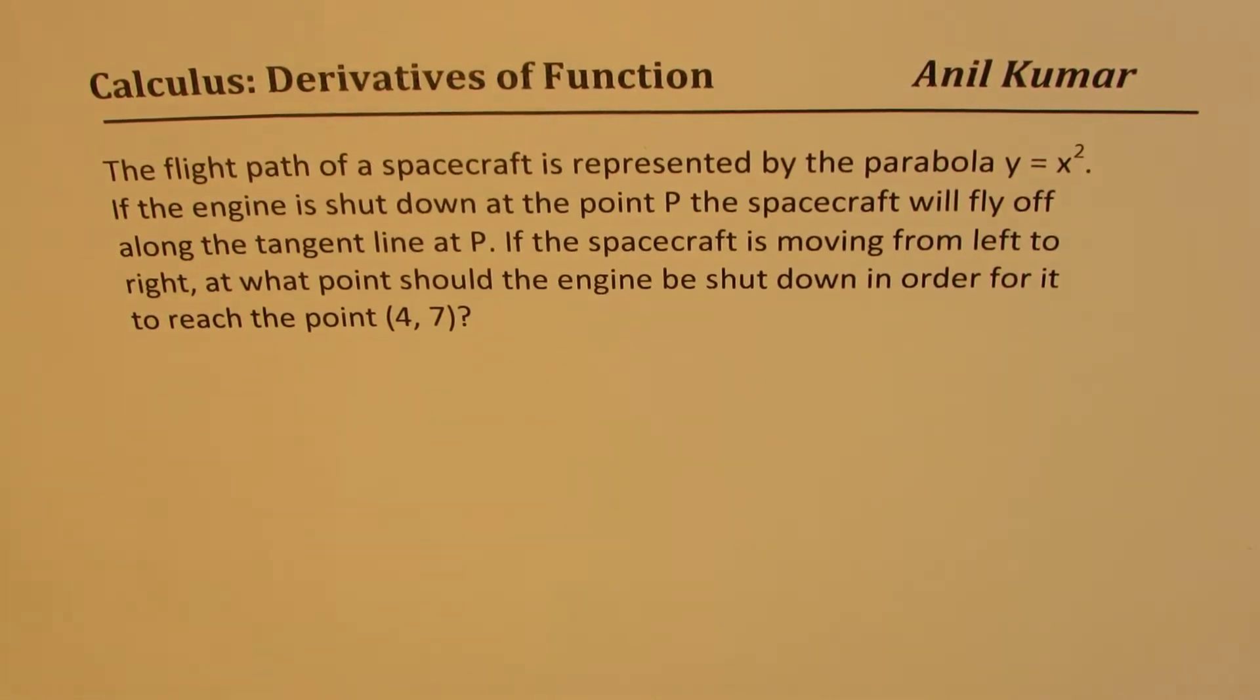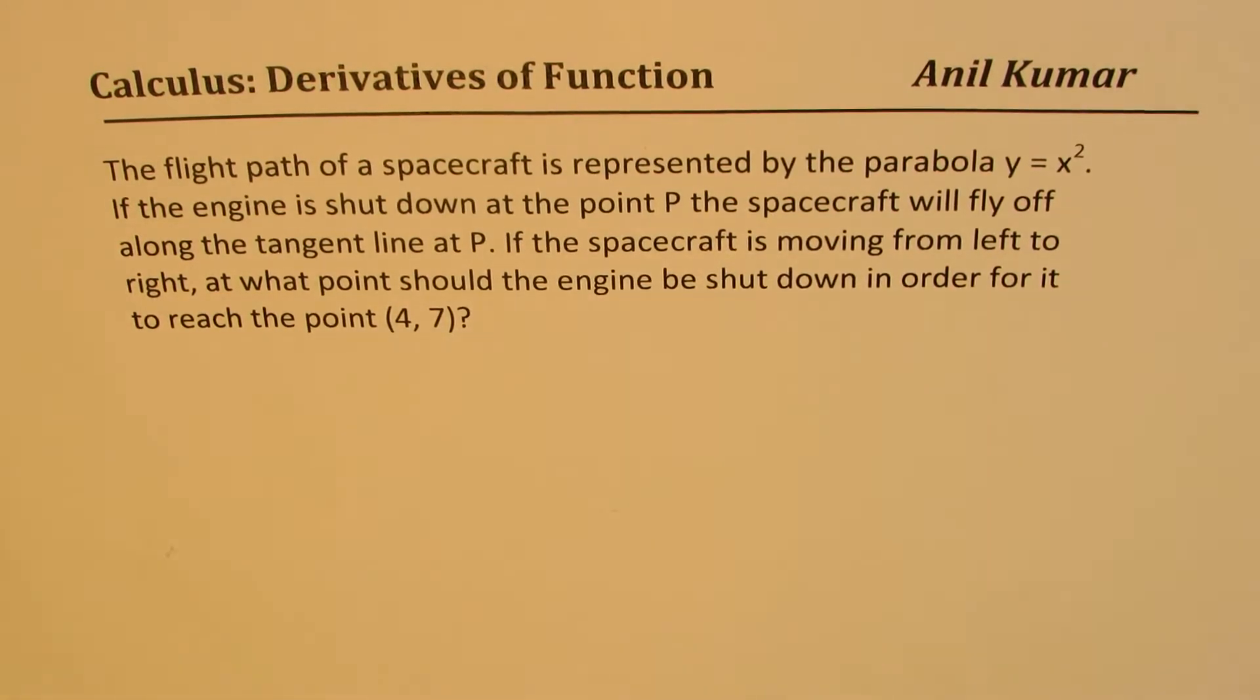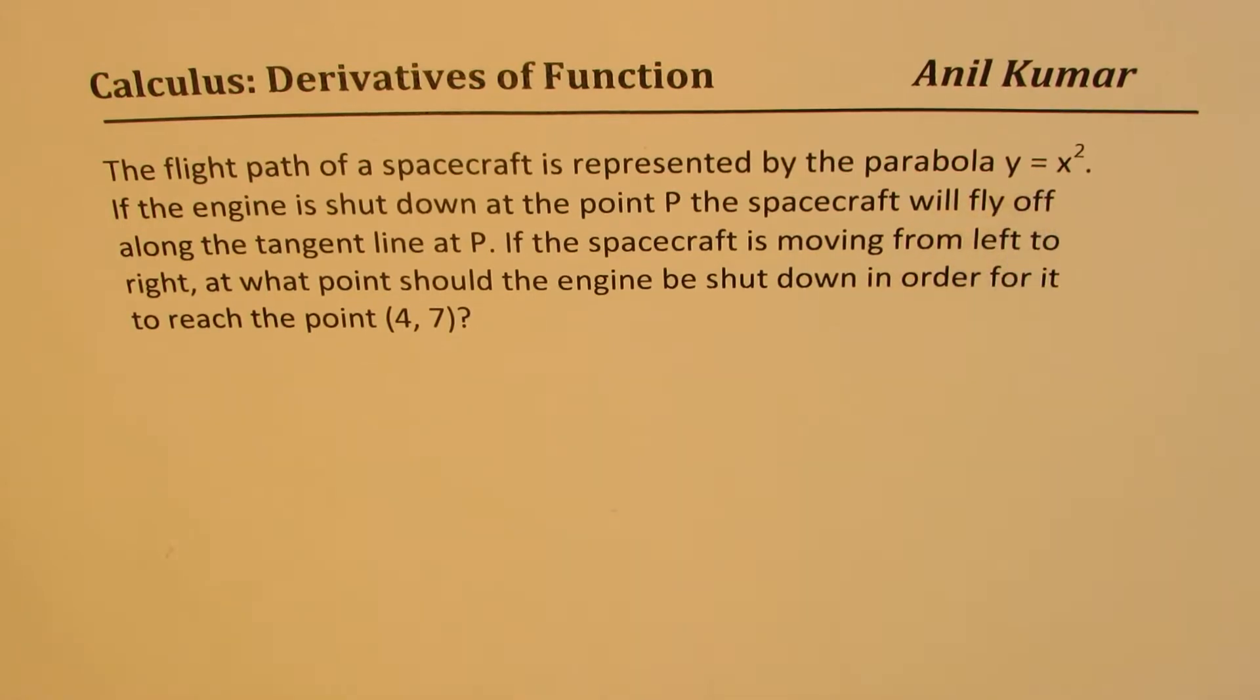Here is one of the best. I have seen this in many test papers. The question here is, the flight path of a spacecraft is represented by the parabola y equals x squared. If the engine is shut down at the point P,